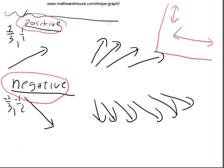That is it for finding the slope from a graph. Keep the general patterns in mind: if it's going up and to the right, you should have a positive slope; down and to the right, negative; straight up and down, you have an undefined slope; and if it's horizontal, you have a slope of 0. If you'd like to practice more problems with slope, go to the webpage where you'll find many other practice problems worked out step by step, as well as a free worksheet with an answer key.